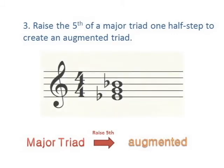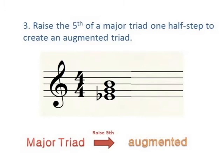E flat, G, B flat is a major triad. By raising the fifth, we find E flat, G, B is an augmented triad.